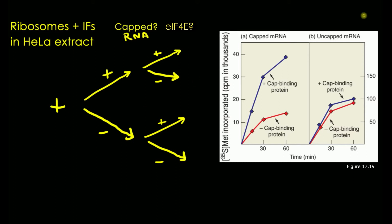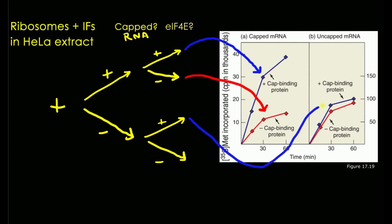These four conditions are highlighted on the figure on the right. Yes capped RNA and yes cap binding protein is highlighted by the blue line. Yes capped RNA and no cap binding protein is the red line. No capped RNA with cap binding protein is this other blue line, and the last condition — no capped RNA without cap binding protein — is the red line on the uncapped side.